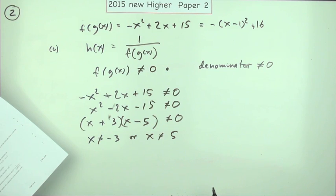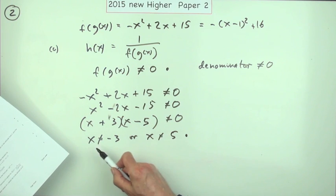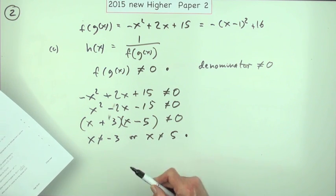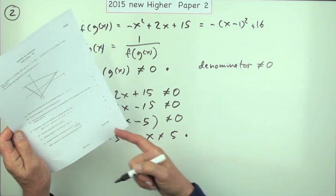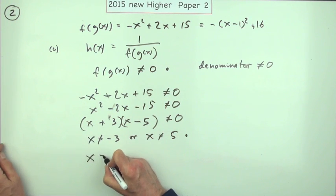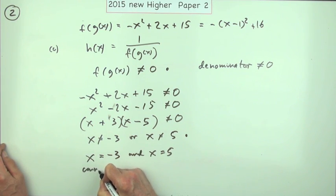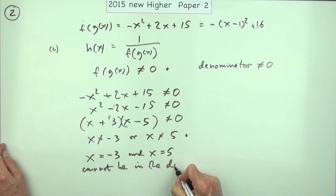And the second mark was just finding the two numbers, whether you wrote x is not equal to or x is equal to. But I think I'll just finish off by saying, if it says what values of x cannot be in the domain, I'm going to finish it this way: x equal to negative 3 and x equal to 5 cannot be in the domain. Because after all, when you're sitting in the exam, you don't know what's going to be in the marking scheme, so you want to be as precise as possible.